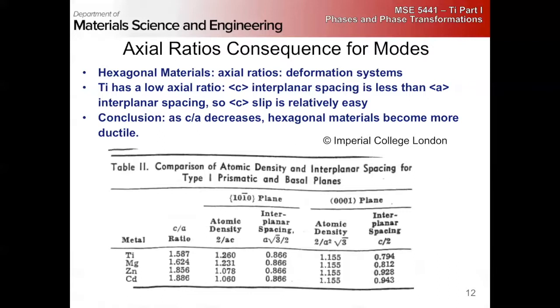The prismatic plane with the slip direction, the Burgers vector direction is 0001 in omega phase. So the 10 bar 10 plane, 0001 slip direction. So pure c slip.